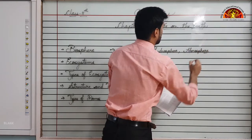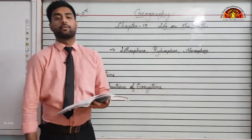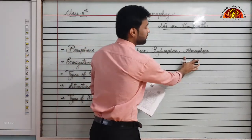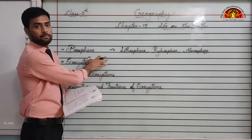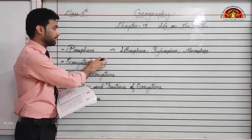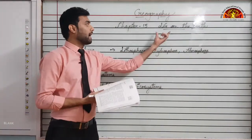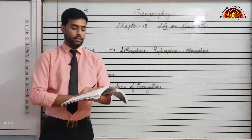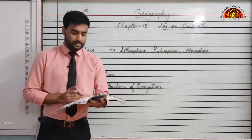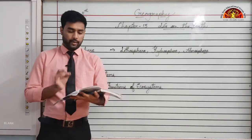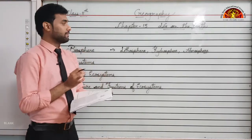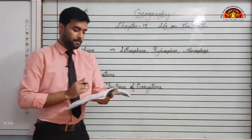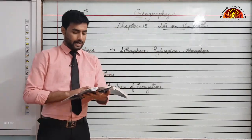The last two chapters of our book revolve around the biosphere. What is biosphere? Where lithosphere, hydrosphere and atmosphere meet, biosphere takes place. Biosphere is the sphere of life. The three major realms of the environment are lithosphere, hydrosphere and atmosphere.